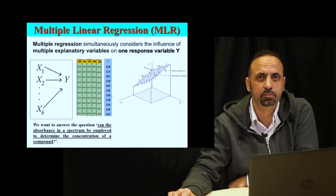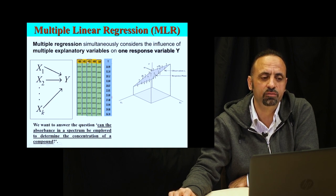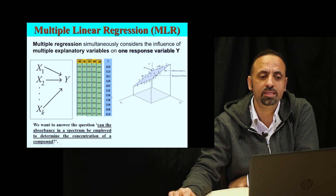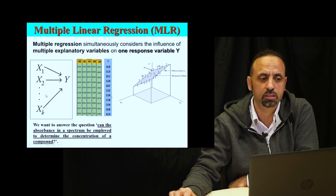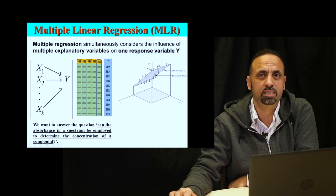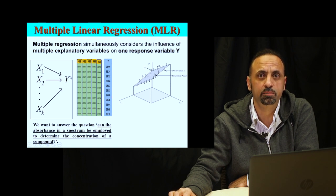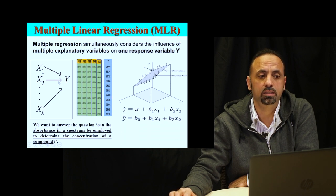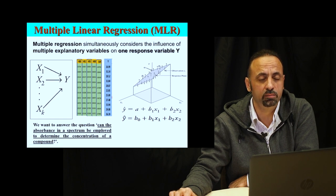But what happens if we have different wavelengths — different variables? That means we have different wavelengths at different bands, and all of these variables should be used to predict the concentration. There are many contributions from the x variables or spectral data to predict the same composition. If we need to express all of this, it's called multiple linear regression — multiple variables to predict one concentration.